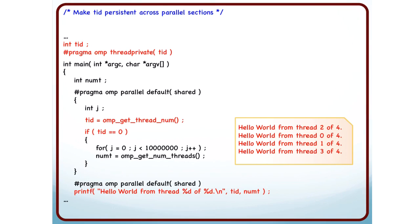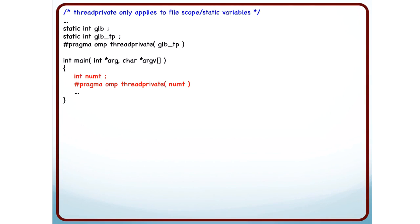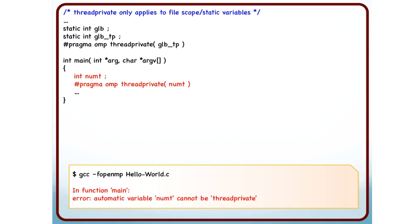Looking at the output, here is the important part: thread private only applies to file scope or static variables. If you define a variable on the stack — if it is local inside a function — then you cannot declare it to be thread private. For example, if int numpty is defined inside main and you declare it to be thread private, when you try to compile it the compiler will give you an error.